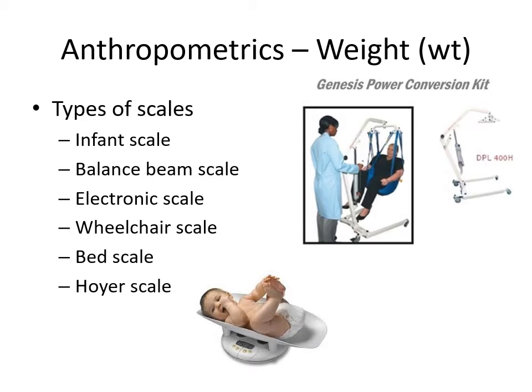There are different types of scales: an infant scale with side walls, a balance beam scale, electronic scales, wheelchair scales with a slight ramp and a gate that lifts to prevent rolling off, bed scales built into the bed, and a Hoyer scale for immobile patients — supportive nylon straps are slid under the patient, the patient is lifted, and weight is assessed.